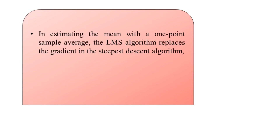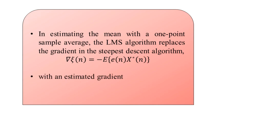The average can be denoted as e(n) with the complex conjugate of x(n). The LMS algorithm replaces the gradient step of the previous algorithm — the steepest descent algorithm. The gradient ∇ζ(n) was equal to minus the estimate of the product e(n) with the complex conjugate of x(n). This has been replaced by the estimate, denoted with a cap over its head: ∇̂ζ(n) equals minus e(n) multiplied by the complex conjugate of x(n).